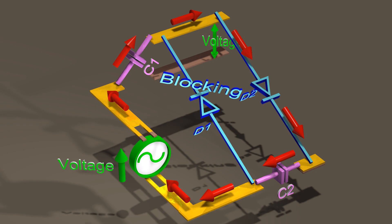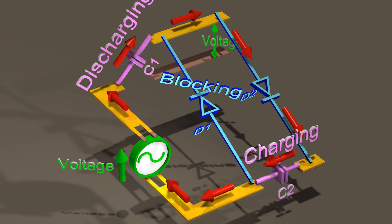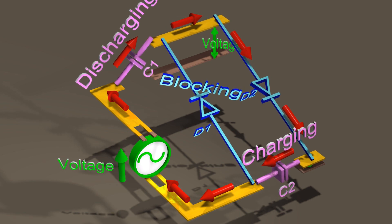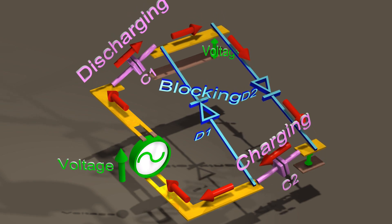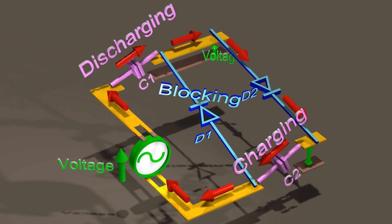When the AC input voltage changes direction, diode 1 will now be blocking, and current will flow through diode 2, causing capacitor 1 to discharge and lose its voltage, whereas capacitor 2 will be charged and gain voltage.